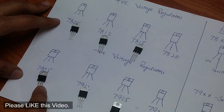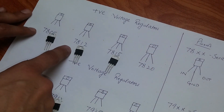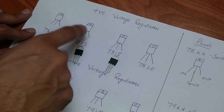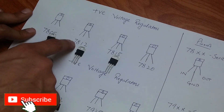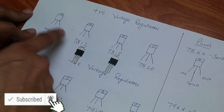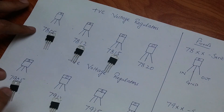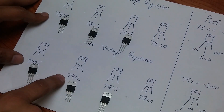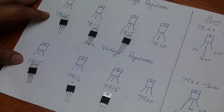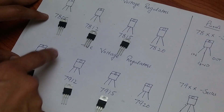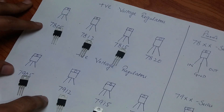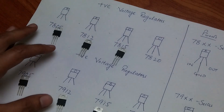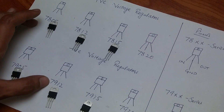This is the 7905 case. Similarly, going to the 7812 — the last two digits show you 12 volts, indicating positive 12 volts output. And 7912 is the negative voltage regulator, so it gives a negative voltage output. Simply put, when we use 7812, we get plus 12 volts, and 7912 gives us a regulated negative voltage output.